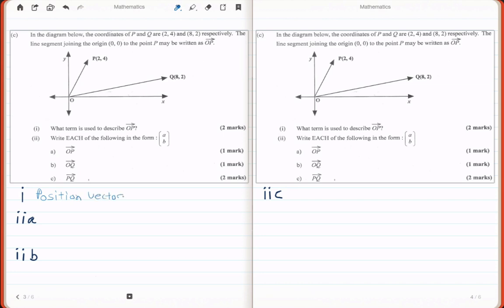In part 2, we're asked to write each of the following in form AB, which is a singular column matrix, and part A asks us to write it for the vector OP. Now, to find the vector form, we look at the coordinate P.